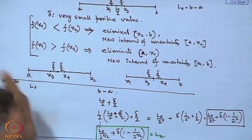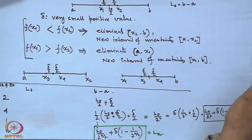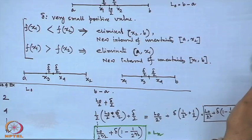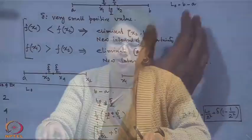The efficiency of the dichotomous searching technique can be measured by the reduction ratio Lₙ/L₀. The same technique will now be illustrated with an example.